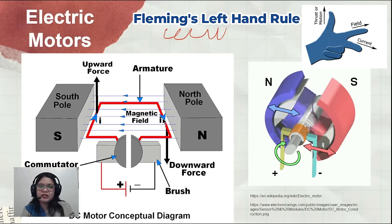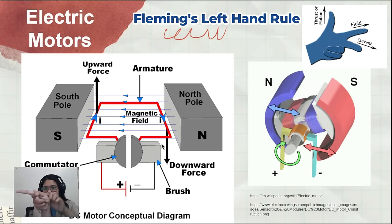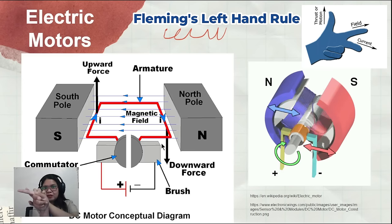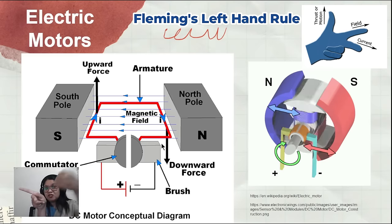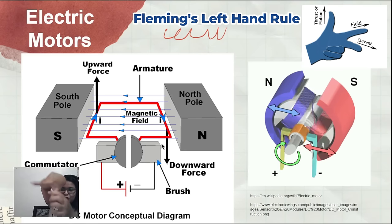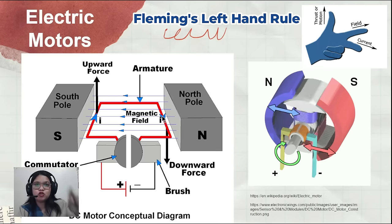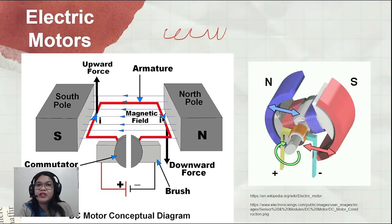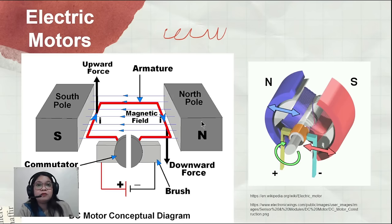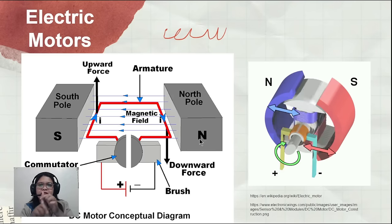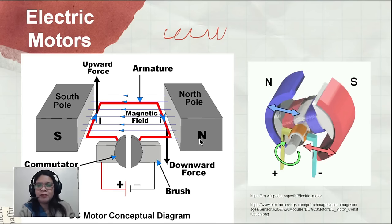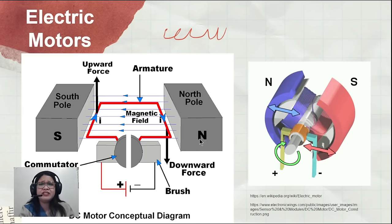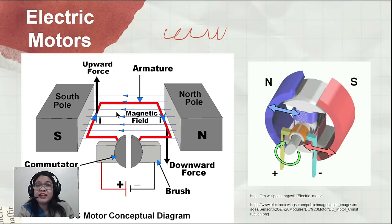On the other side, the magnetic field still goes toward the left, but the current is going outwards, so the force would be downward. This means the force on that side also pushes the armature in the clockwise direction. Of course, the movement would differ if you place the north pole on the left and south on the right, because your index finger would point in a different direction. In higher physics, that is what we use to identify the directions of the forces.